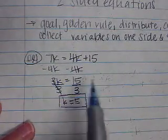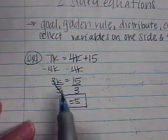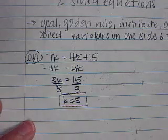I know that if I plugged in 5, 5 times 4 is 20, plus 15 is 35. 7 times 5 is 35. So those two would be equal. I could always check by plugging it back in.